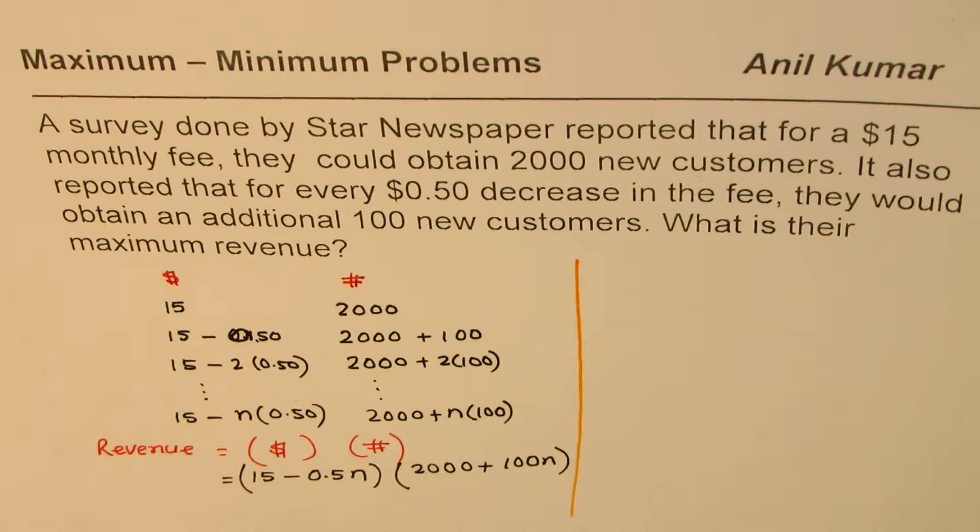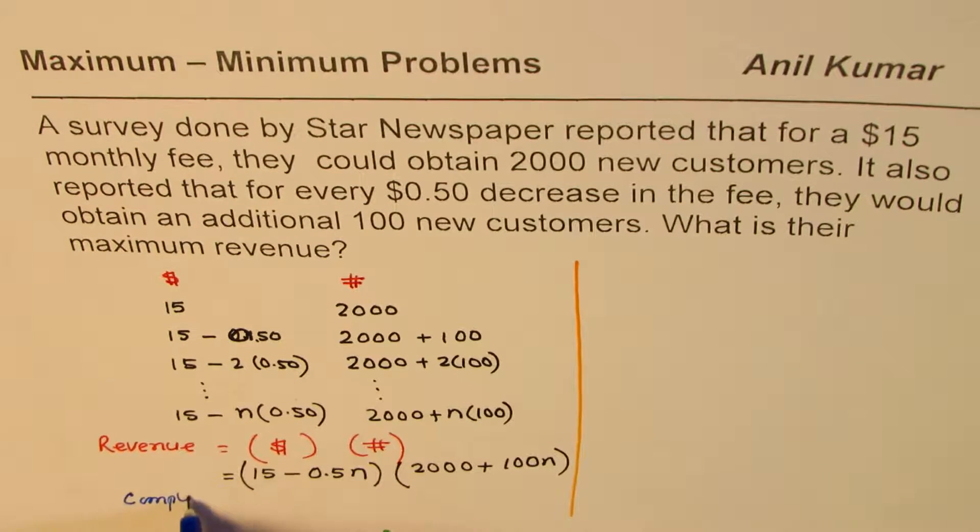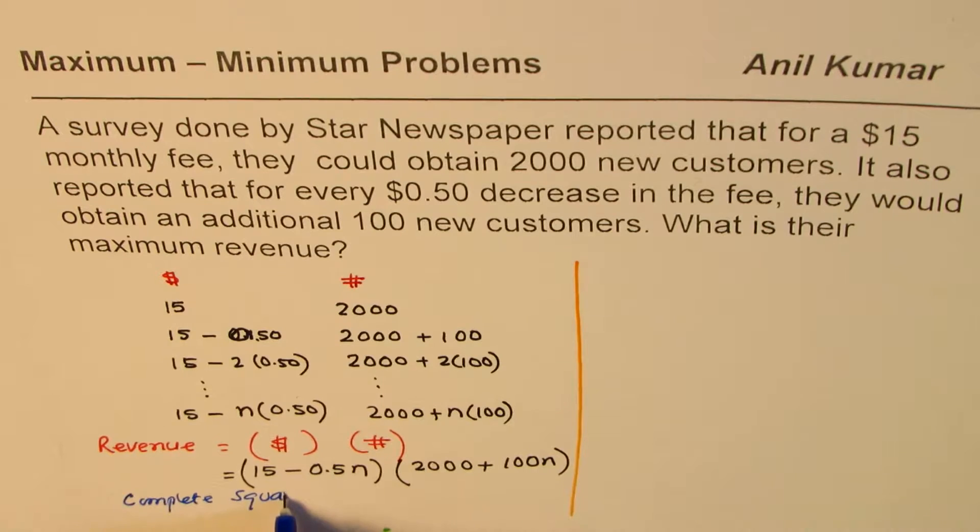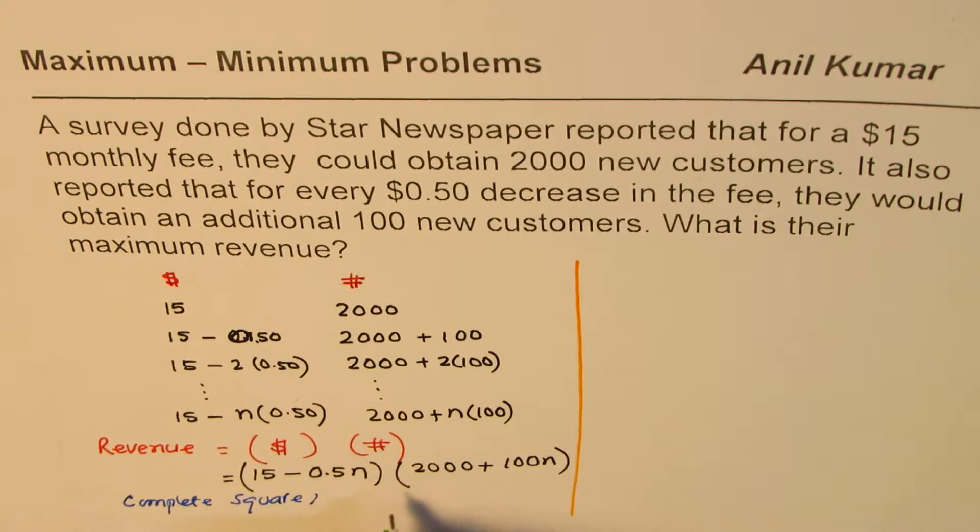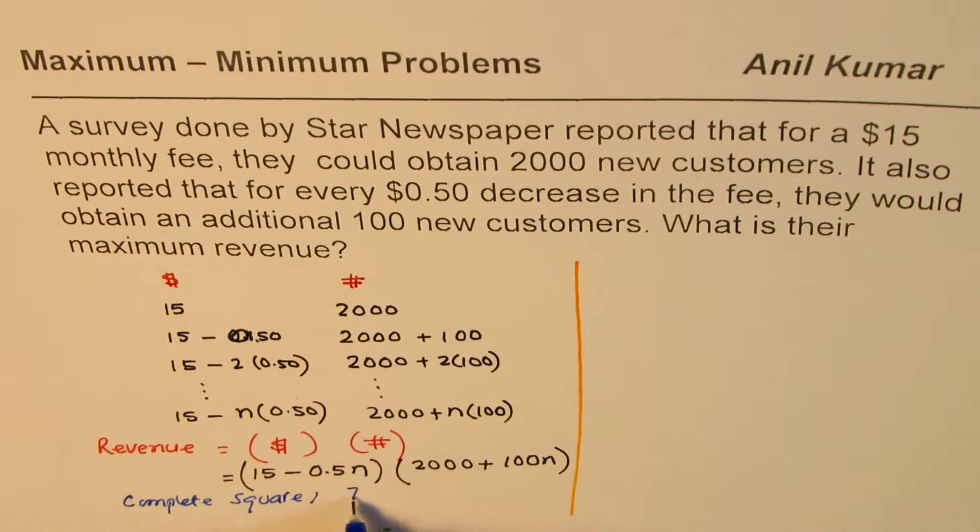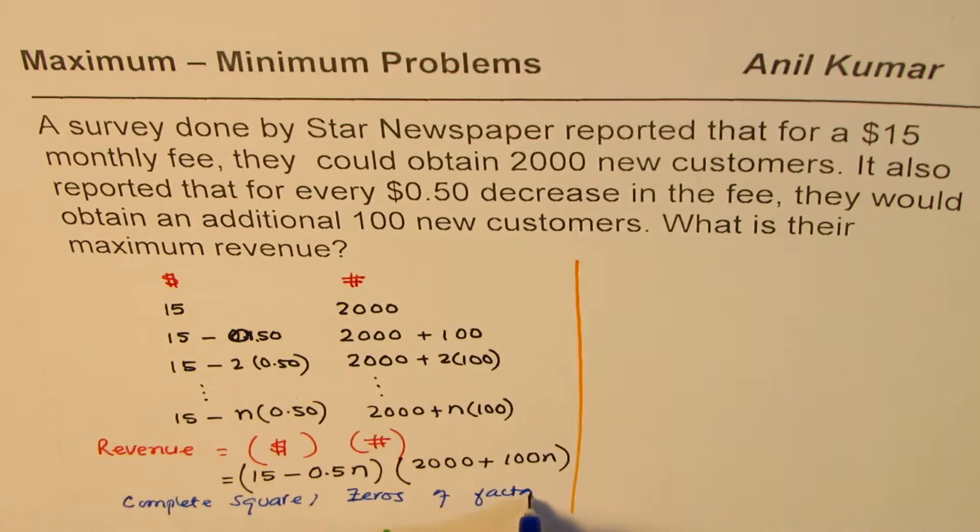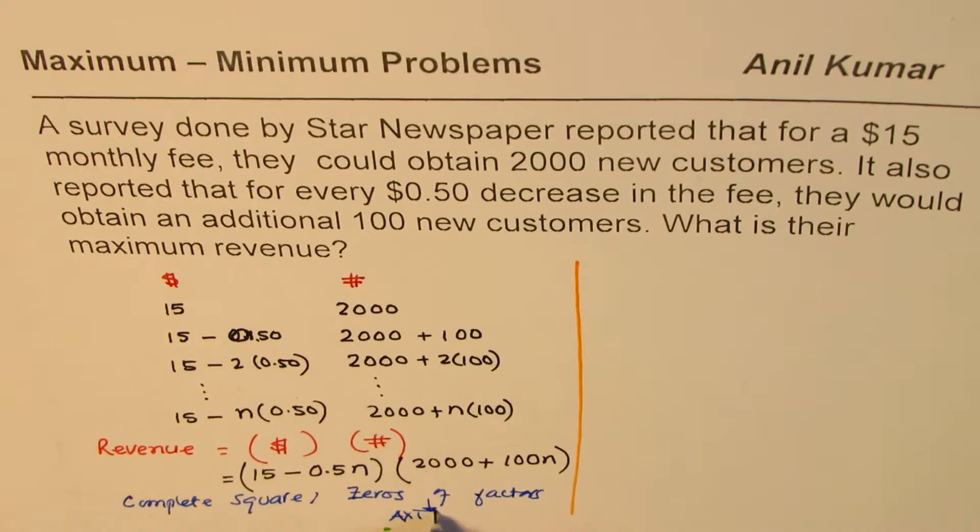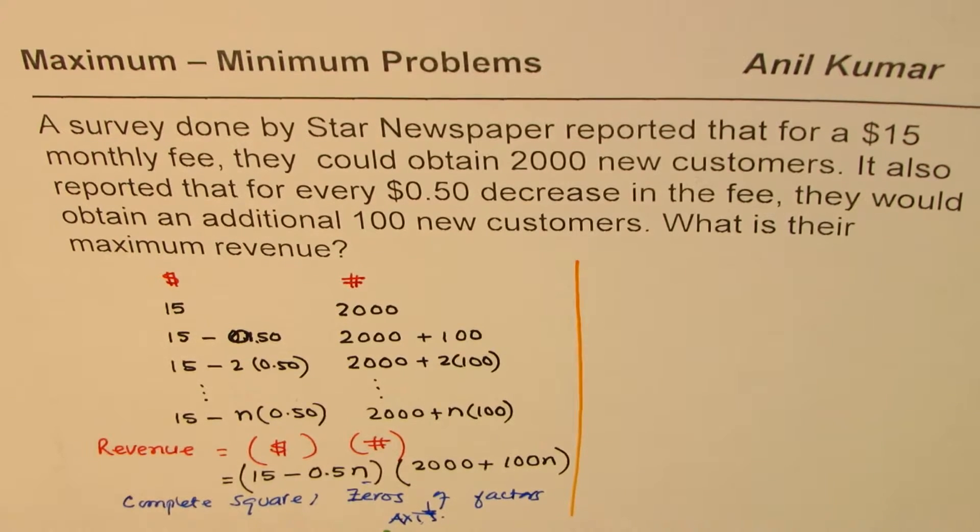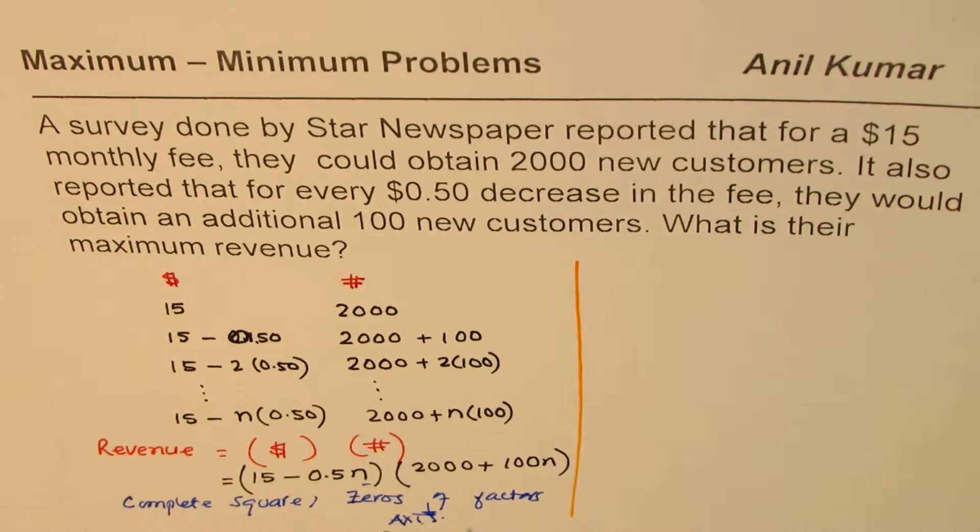Now it says, what is the maximum revenue? So when maximum revenue, how could you find it? Well, one method is, we can do completing squares. You could graph and get it. You could also use, from these factors, zeros of factors, which will give you the value of n. So that is a very good method to do.